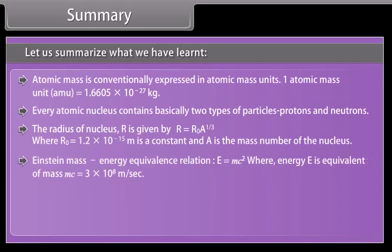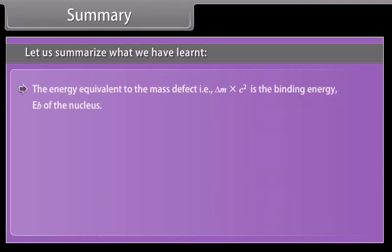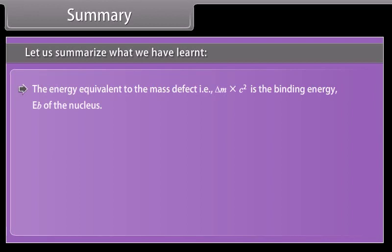Einstein mass-energy equivalence relation: E equals MC squared, where energy E is equivalent of mass M. C is the velocity of light in vacuum, that is 3 into 10 raised to the power 8 meters per second. The mass of a stable nucleus is less than the total mass of its nucleons. This difference delta M in mass is called mass defect.